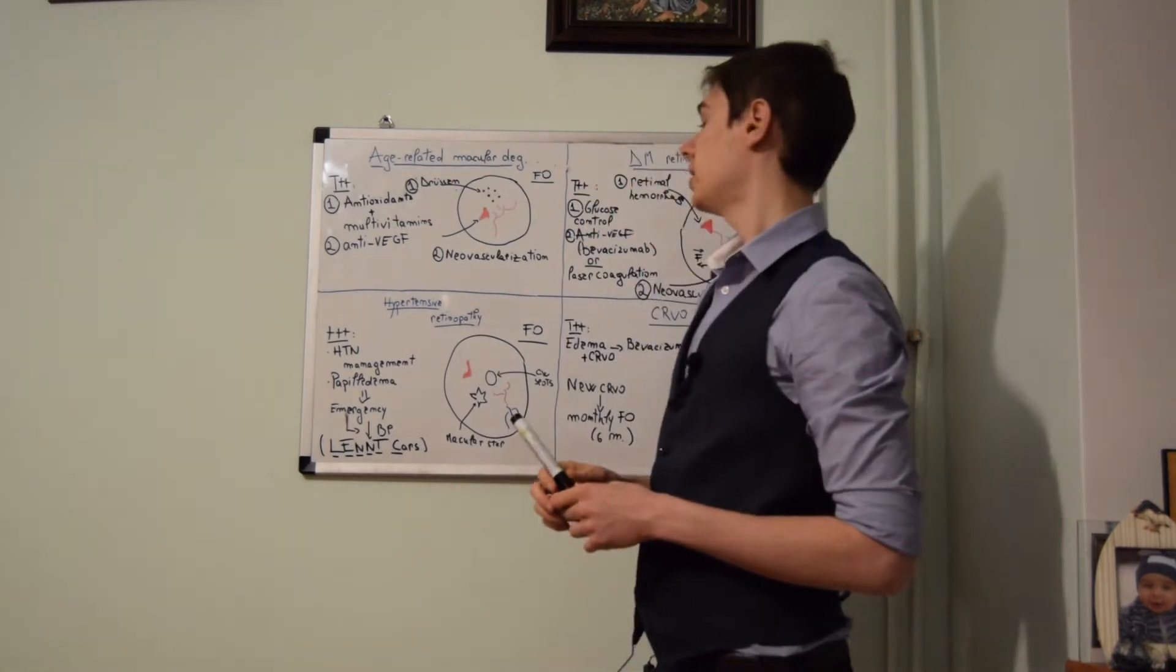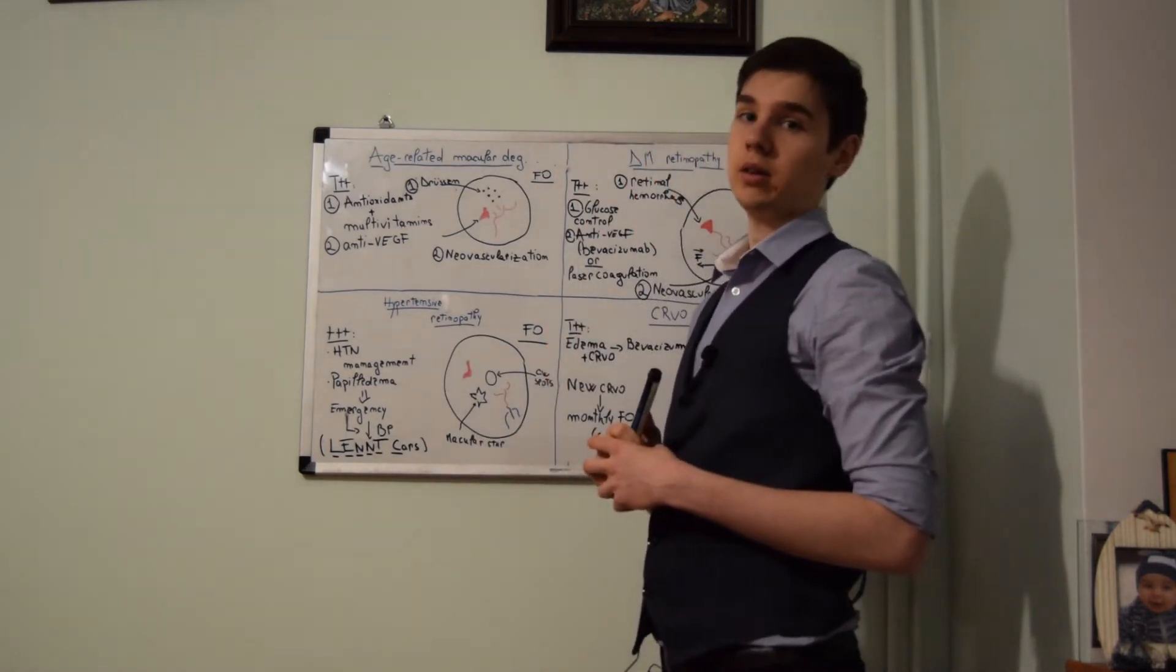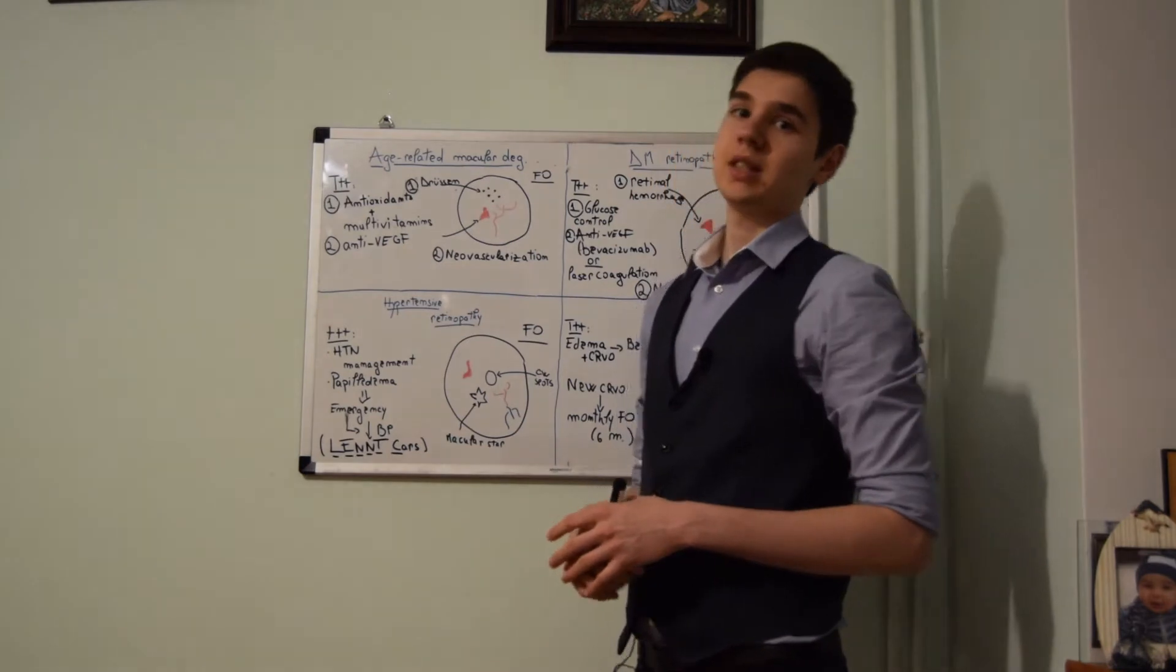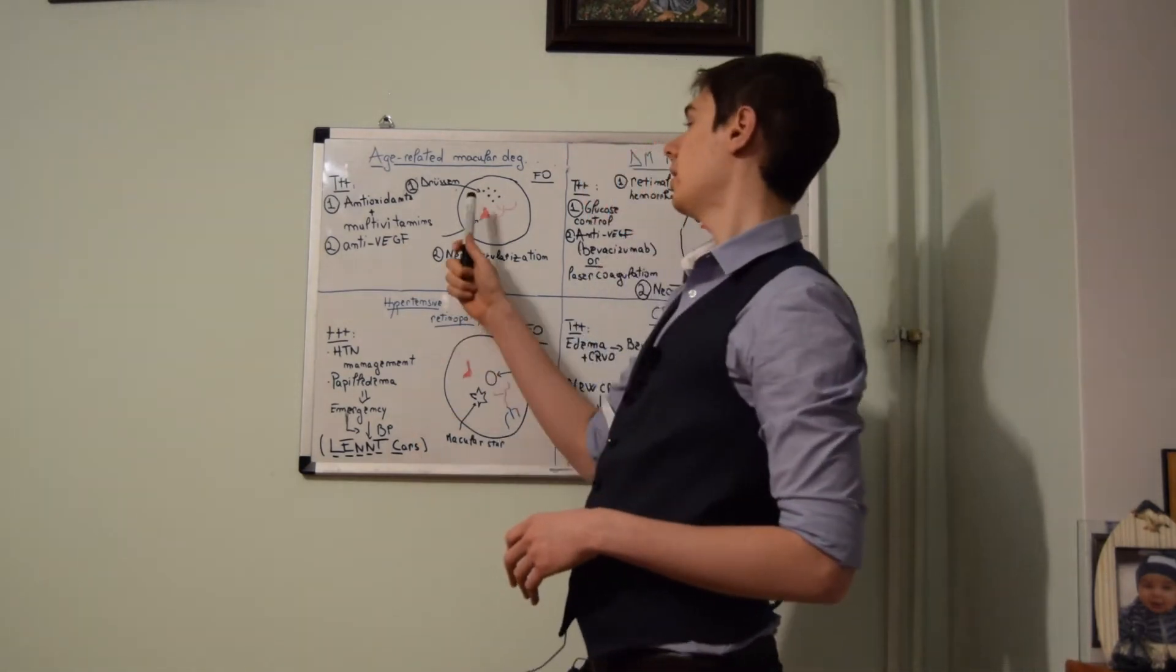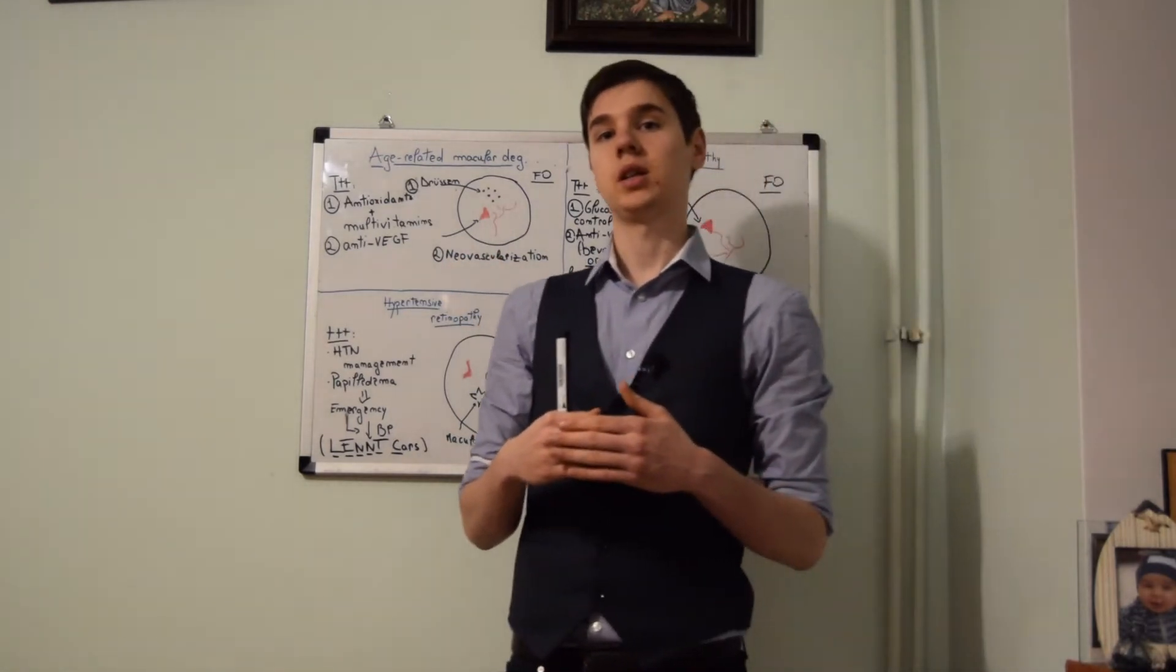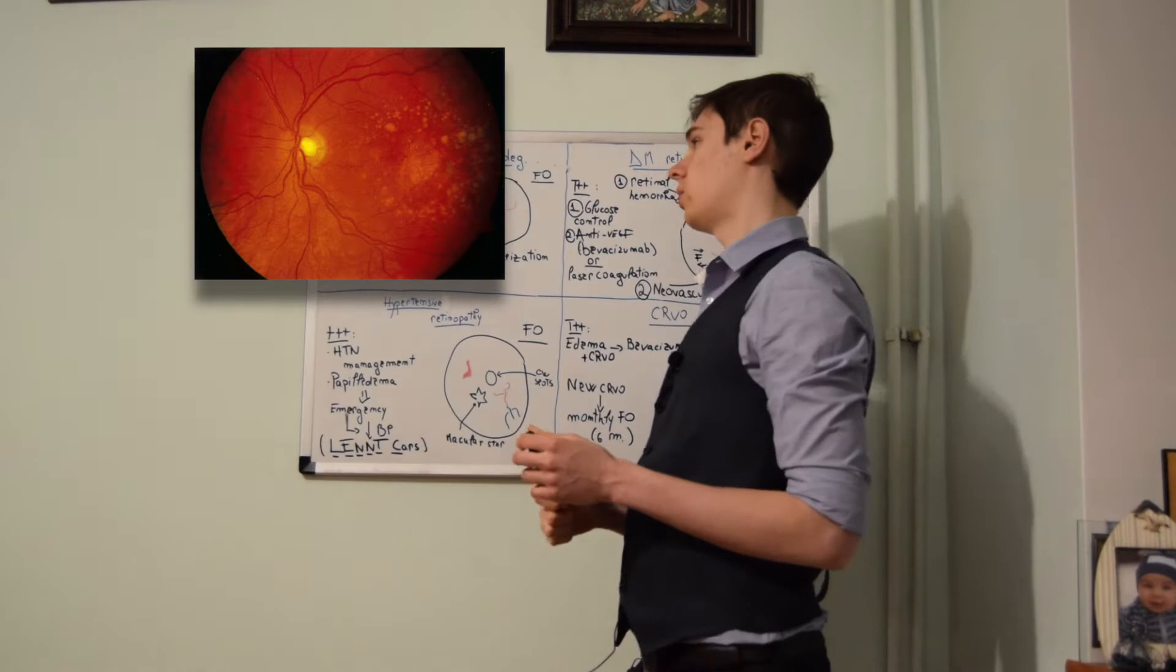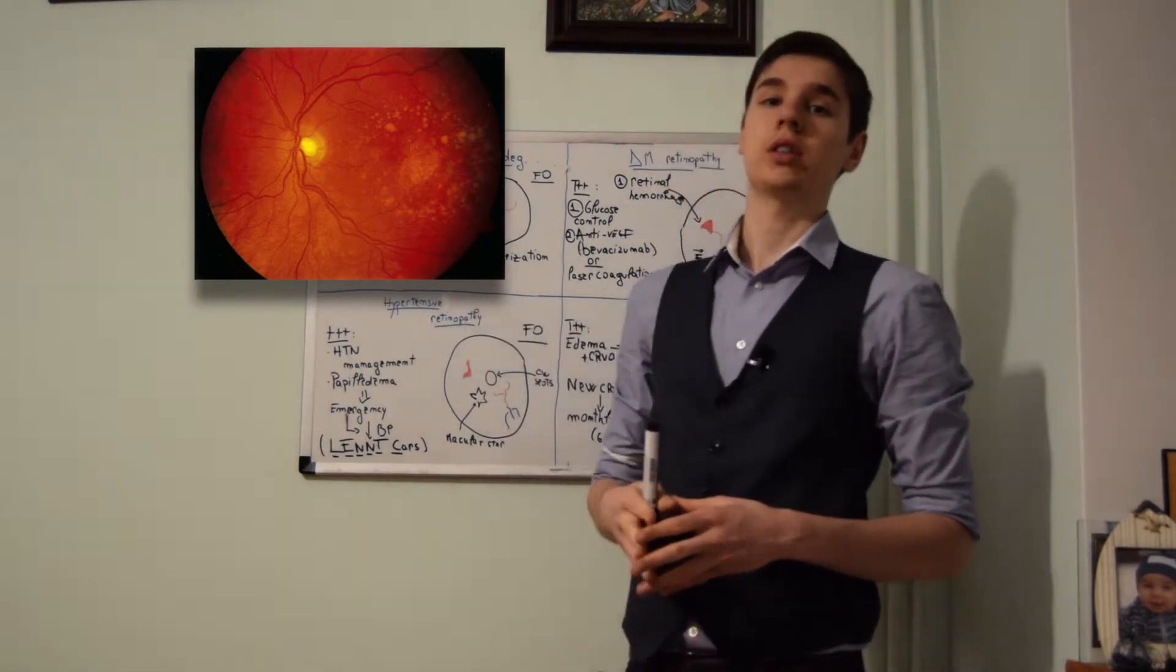On the fundoscopic images, we have two types of age-related macular degeneration. Firstly, the dry age-related macular degeneration represents 80% of the cases. It presents with yellow pigment between the Bruch membrane and retinal pigmented epithelium. This yellow pigment is called drusen.